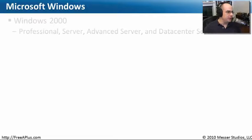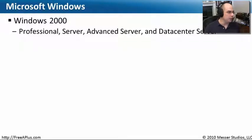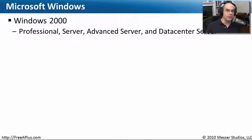There have been many different versions of Windows. We're going to focus our efforts today on the ones that are on the CompTIA A+ certification. Windows 2000 is certainly one of those. There were a few different flavors of Windows 2000: Windows 2000 Professional, which is the one you most often see on people's desktops, and Windows 2000 Server, Advanced Server, and Data Center Server, which were versions specifically built for use in large computing environments.